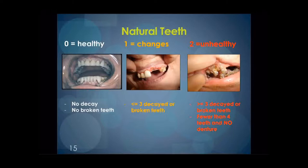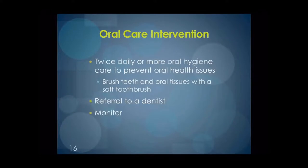Natural teeth. Healthy teeth show no evidence of decay and no broken teeth. Note that old amalgam or silver fillings can sometimes appear quite black-looking and are not to be confused with decay. A level 1 change is indicated with up to three decayed or broken teeth, and level 2 is beyond three decayed or broken teeth, or fewer than four teeth remaining with no denture. The oral care intervention is twice daily brushing with a soft toothbrush, referral to a dentist if there is any evidence of decay, and monitoring.